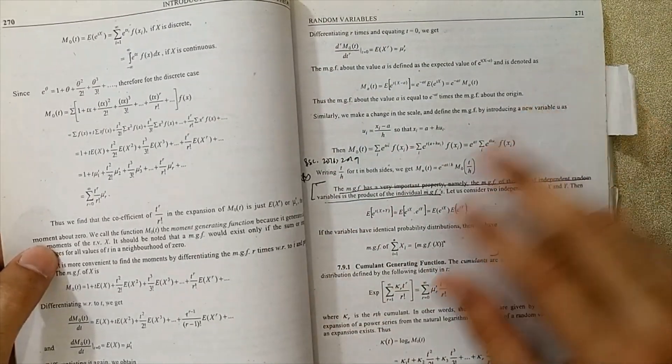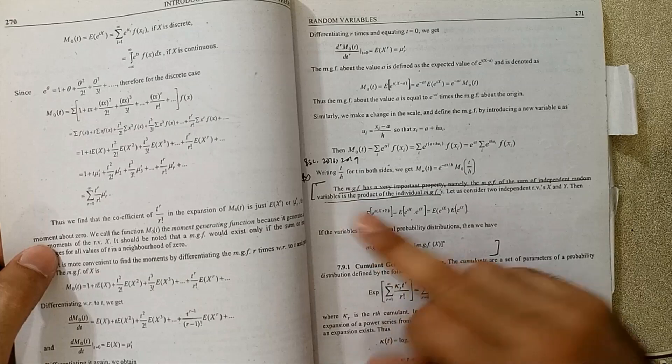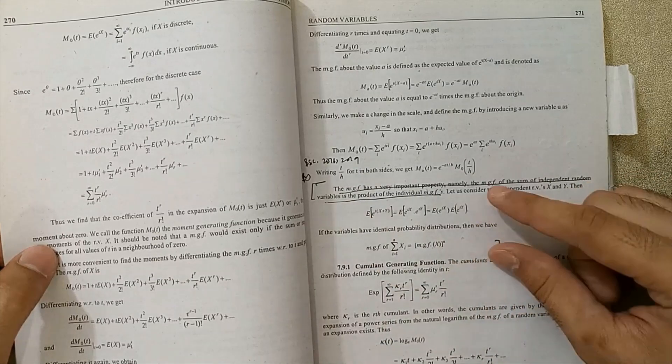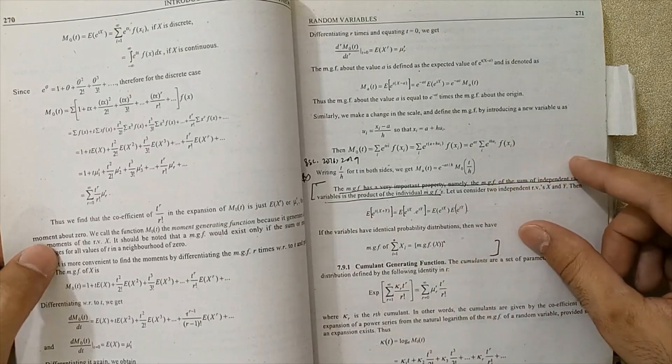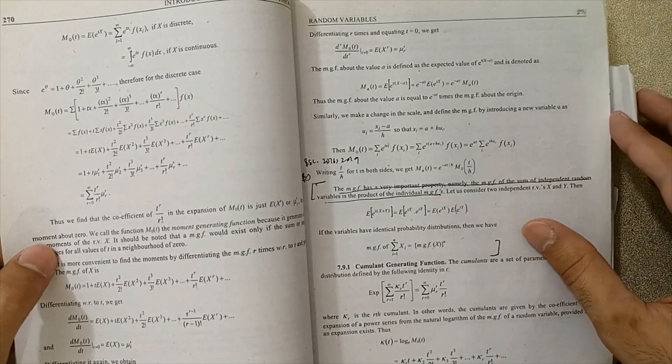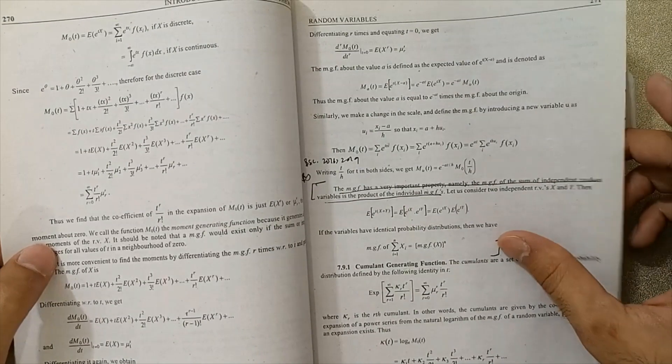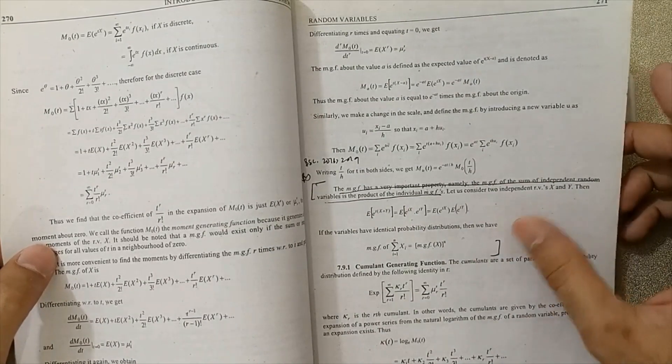At page 271, the question for the MGF, this formula and statement are very important. The MGF topic is very important - this is the proof of MGF, must remember this proof.